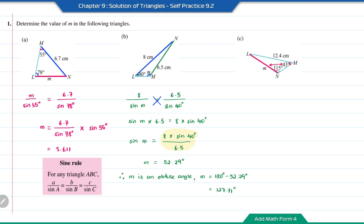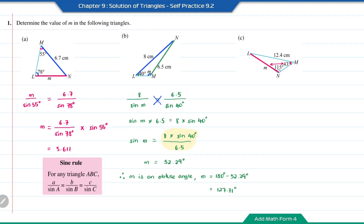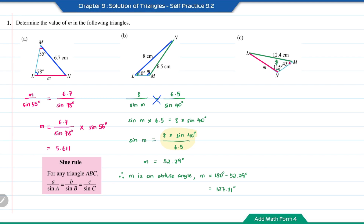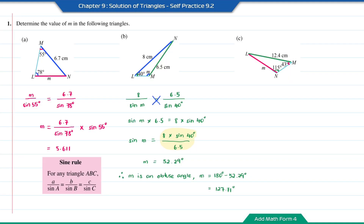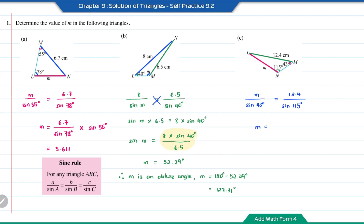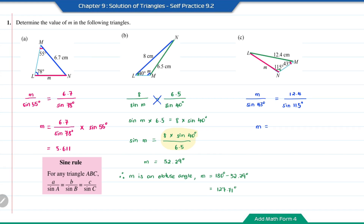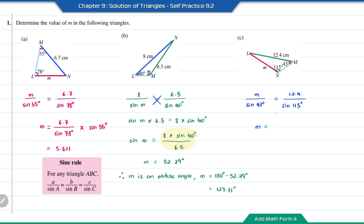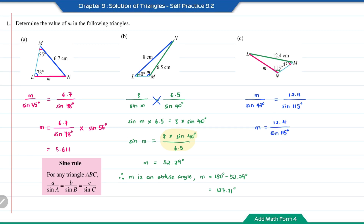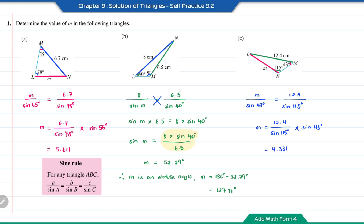Question C: Length M is opposite angle 43°, and length 12.4 is opposite angle 115°. Using the sine rule: M over sine 43° equals 12.4 over sine 115°. Therefore, M equals 12.4 over sine 115° times sine 43°, which gives 9.331.